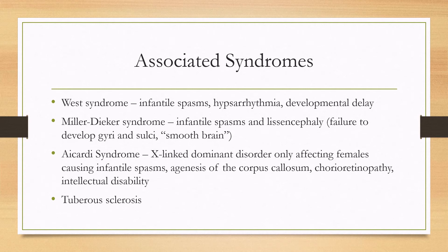Aicardi syndrome is an X-linked dominant disorder that only affects females because the males die. This will cause infantile spasms and agenesis of the corpus callosum, chorioretinopathy, and intellectual disability. Tuberous sclerosis is also an important associated syndrome, specifically because there is a treatment which we'll talk about in the next slide.